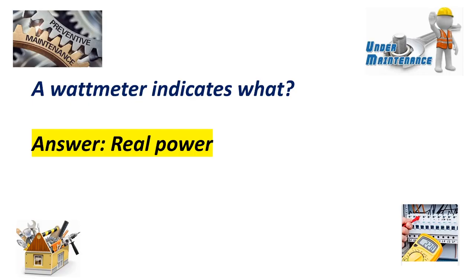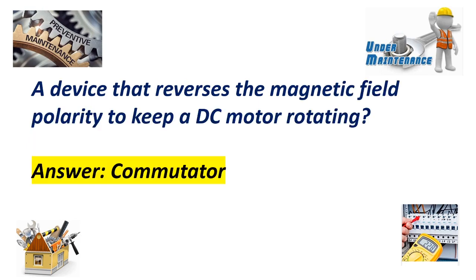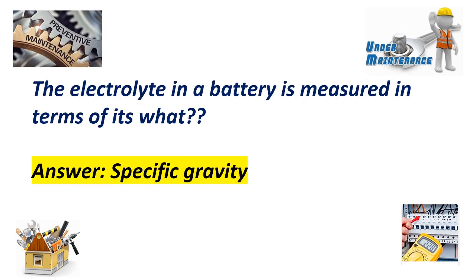A wattmeter indicates watt, real power. A device that reverses the magnetic field polarity to keep a DC motor rotating? Commutator. The electrolyte in a battery is measured in terms of? Answer: Specific gravity.